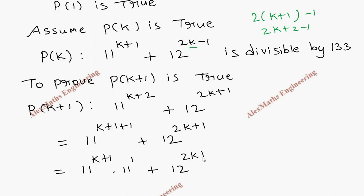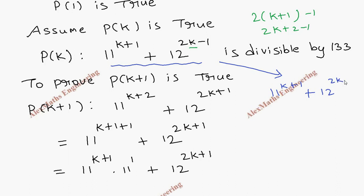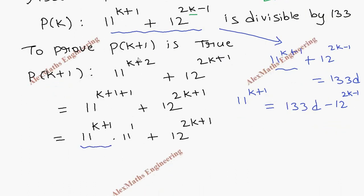From the inductive hypothesis, since P(k) is divisible by 133, we have 11^(k+1) + 12^(2k-1) = 133d. This means 11^(k+1) = 133d − 12^(2k-1). We substitute this into our expression.